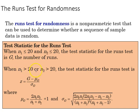When n1 or n2 is greater than 20, the test statistic is going to be z equal to G minus the mean runs over the standard deviation of runs. We can calculate those down here where the mean of runs is two times the sample size product divided by the sum of sample sizes plus one.